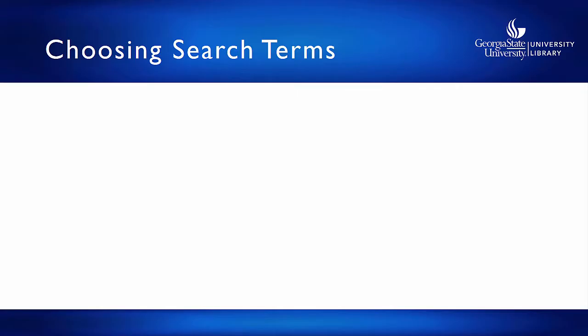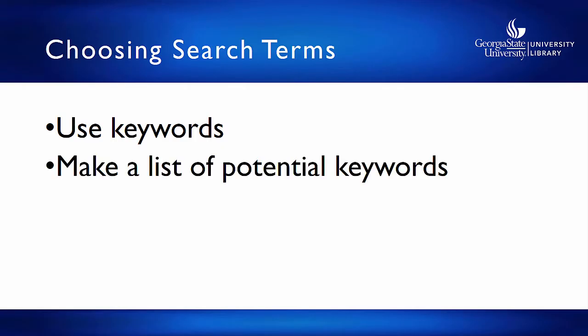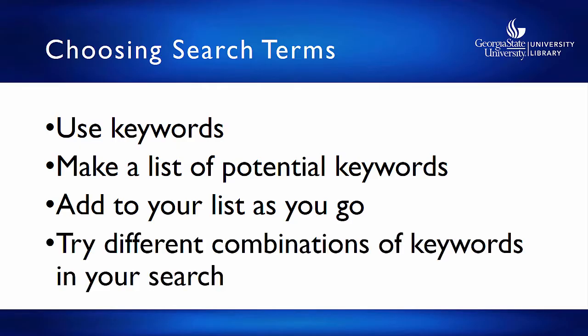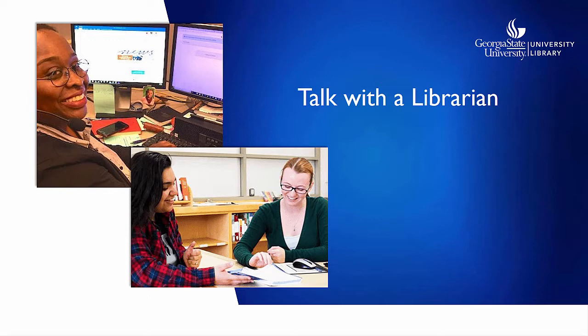In summary: use keywords as your search terms, not natural language. Make a list of potential keywords including synonyms and related terms, and add to the list as you discover more terms in your search. Finally, try different combinations of keywords as you search. If you have questions about search terms or any other aspect of your search, remember librarians are happy to help online or in person.